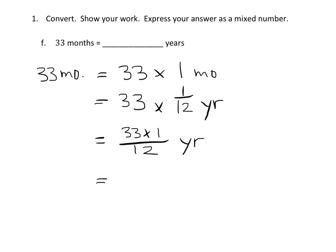And 33 times 1 is 33, there is no reducing or simplifying that we can do at this point. So the answer is 33 twelfths. Now, we need to change it to a mixed number. So we're going to say, 33 twelfths.